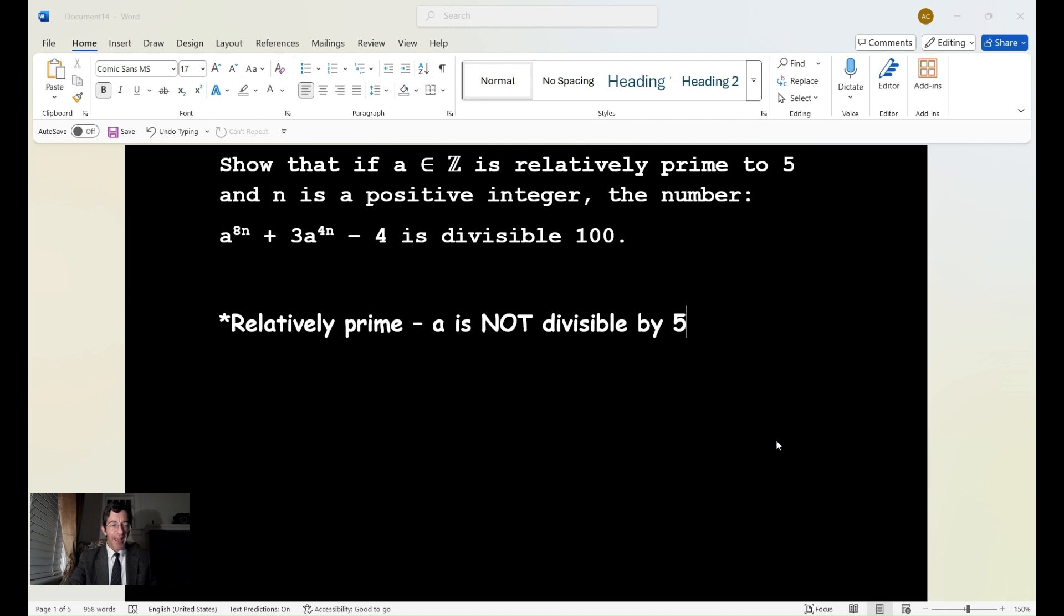the number a^(8n) + 3a^(4n) - 4 is divisible by 100. It should say here, not divisible by 100, is divisible by 100.